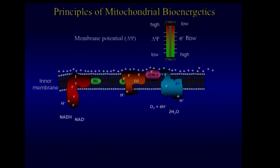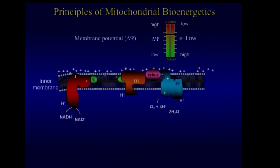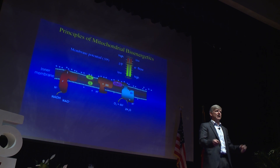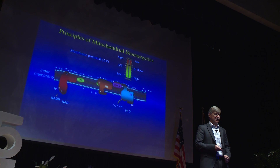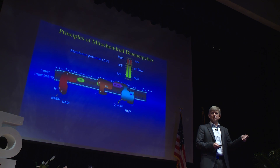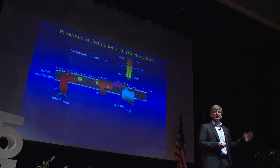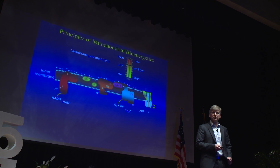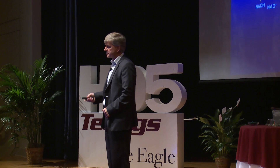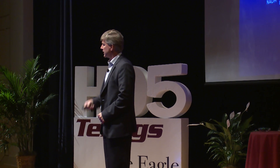Mitochondria never do this in vivo because they are slightly leaky — the membrane is slightly leaky to protons. Recognize what that means: electrons can start flowing, the membrane potential drops a little bit, and oxygen can start being consumed again. Basically, it's the way to get the system going again. If there's another protein inserted into the membrane that allows protons to flow through back into the matrix, like the ATP synthase, the system starts running faster.